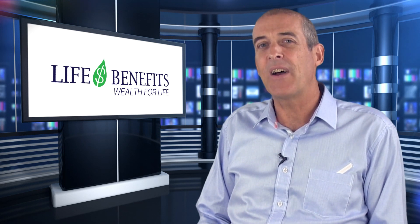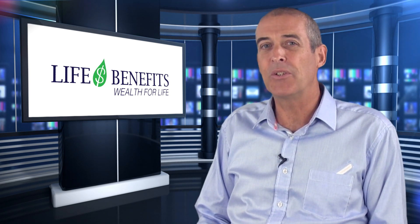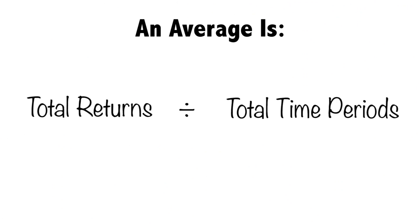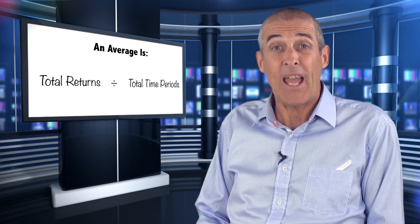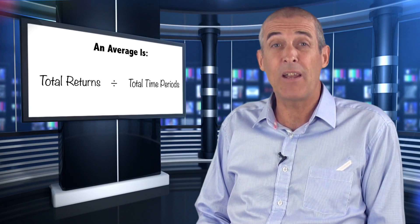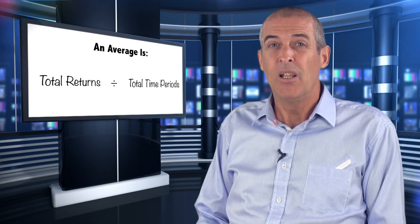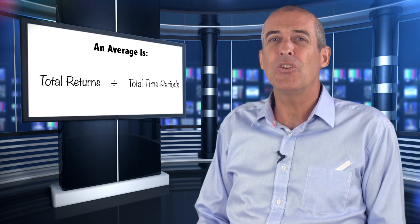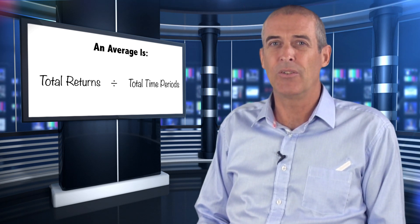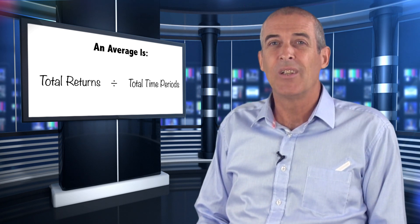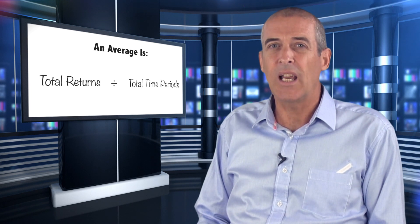Now consider what a 5% average rate of return really is. An average is the total returns divided by the total time periods of an investment. So an average rate of return of 5% for one period is awesome, but on an average rate across multiple periods, things are not quite so clear cut.